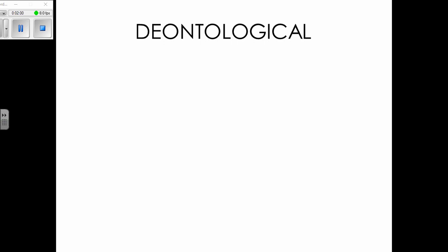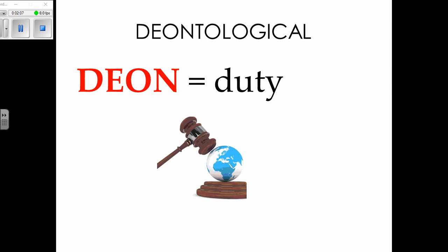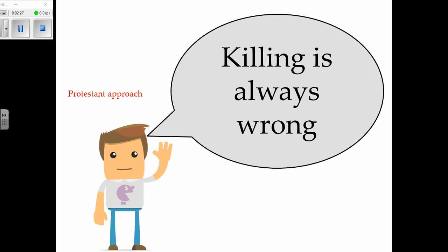The rightness or wrongness of an action should always be adhered to. A good example of deontological ethics is natural law, which says things like it is always wrong to use a condom even if it has a good consequence. Another example would be the Ten Commandments — rules you just have to follow. Many Protestants also believe killing is always wrong, regardless of when or why.